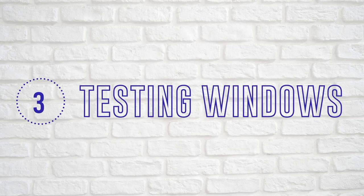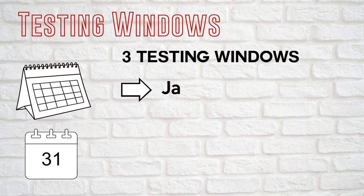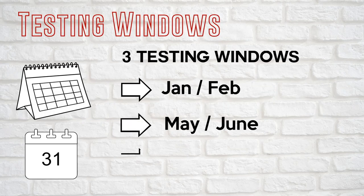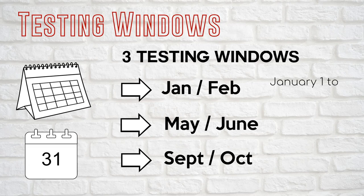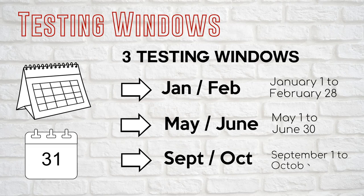Now let's talk about the testing windows. The first testing window is January and February, then May and June, and lastly September and October. You can select your testing date on any day within those months. In addition, you may take both parts in one testing window — for instance, you take Part 1 in January and Part 2 in February.